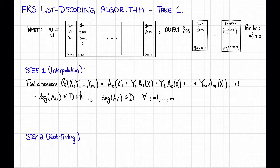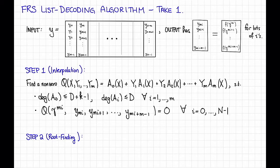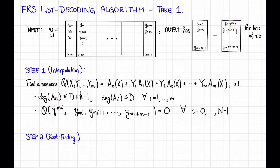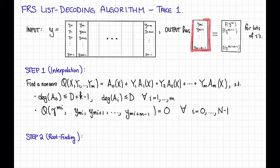Moreover, we're going to want Q to vanish on a bunch of particular points. That is, we're going to want Q of (gamma^{Mi}, Y_{Mi}, Y_{Mi+1}, ..., Y_{Mi+M-1}) to be equal to 0 for all i between 0 and N minus 1. Notice that this mimics the sort of constraint that we wanted on Q in the Guruswami-Sudan algorithm. We think of the variable X as taking on some evaluation point — the first evaluation point for a symbol — and the rest of the Y's are taking on the value of the received word.